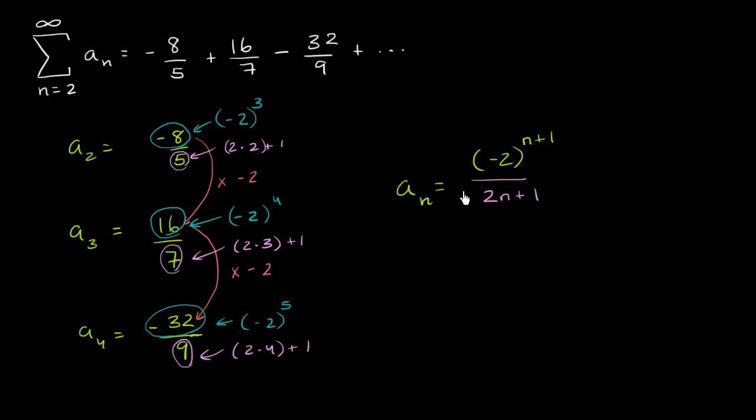And we're done. That's what a sub n is. And if we wanted to write this series in sigma notation, we would write this as a sum from n equals 2 to infinity of negative 2 to the n plus 1 power over 2n plus 1. And that would equal this series right over here.